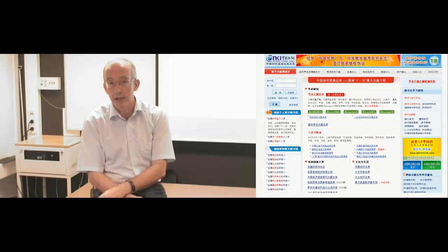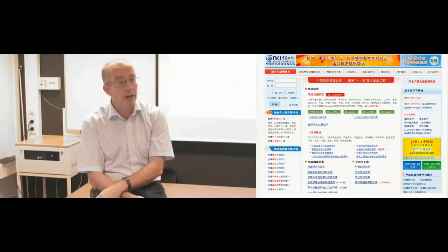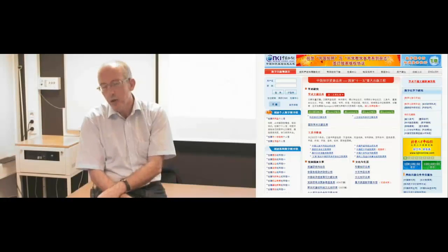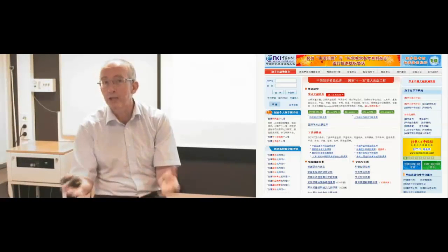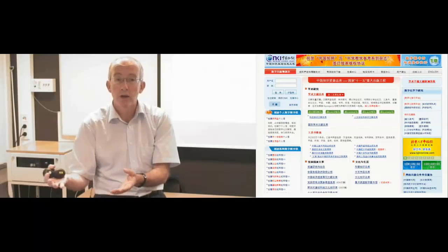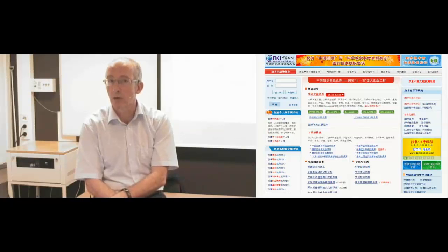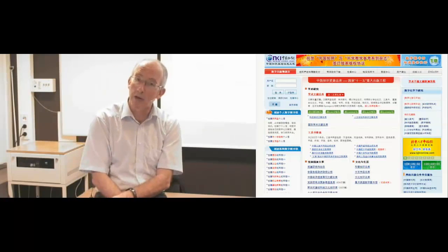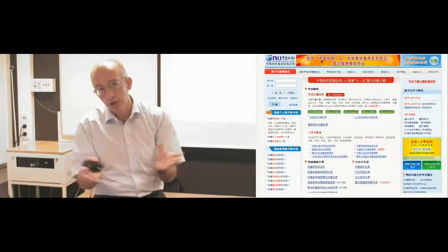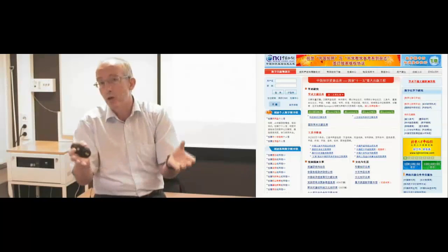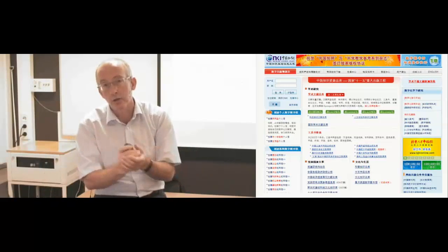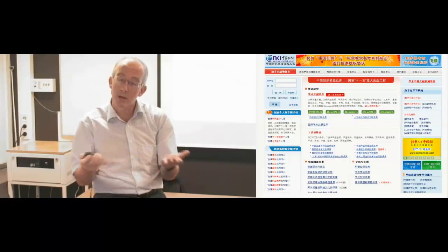I once did a meta-analysis based on a Chinese database together with Chinese colleagues, and I think it's a good example showing that if you do systematic searches, you never get all the hits there are. We found more randomized trials in China on psychological treatments for depression in older adults than in the rest of the world combined. So if you just search PubMed, PsycInfo, and the Cochrane database, you would think you've identified all trials — but that's not true, because many are not published in English.